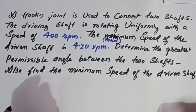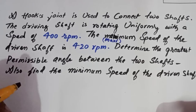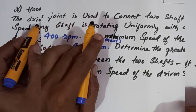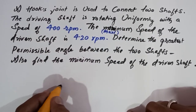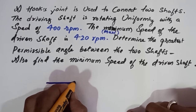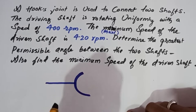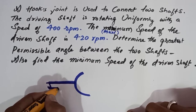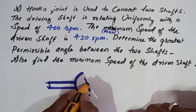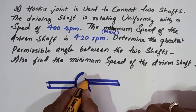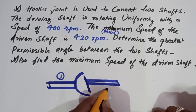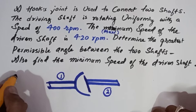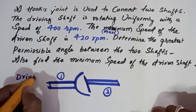Hello students, today I am going to solve problems on the hook joint. Here we have the question on screen. A hook joint is used to connect two shafts — one shaft will be considered as the driving shaft. I will draw a sketch to make it clear. This is shaft one and this is shaft two; shaft one is the driving shaft and shaft two is the driven shaft.